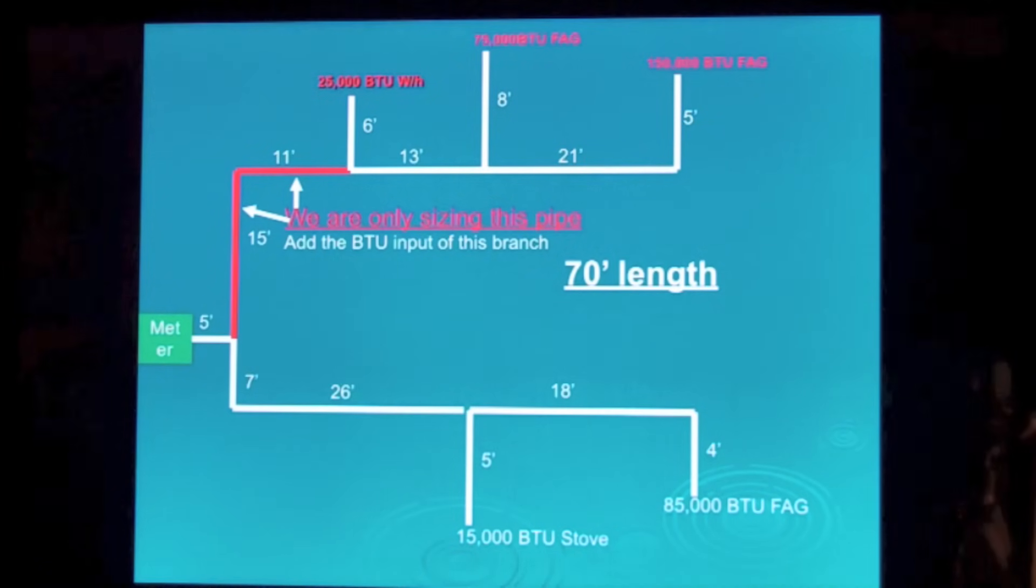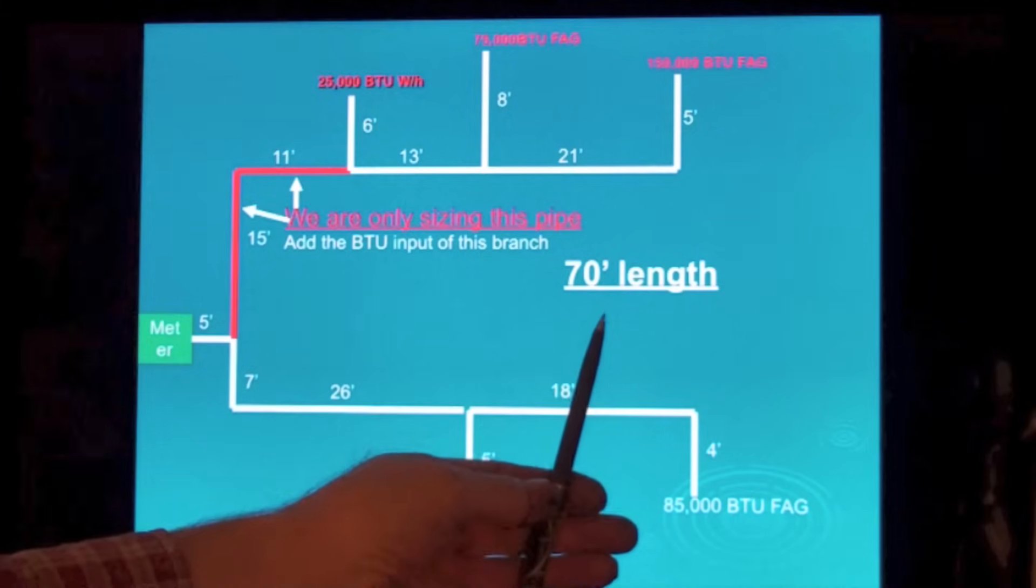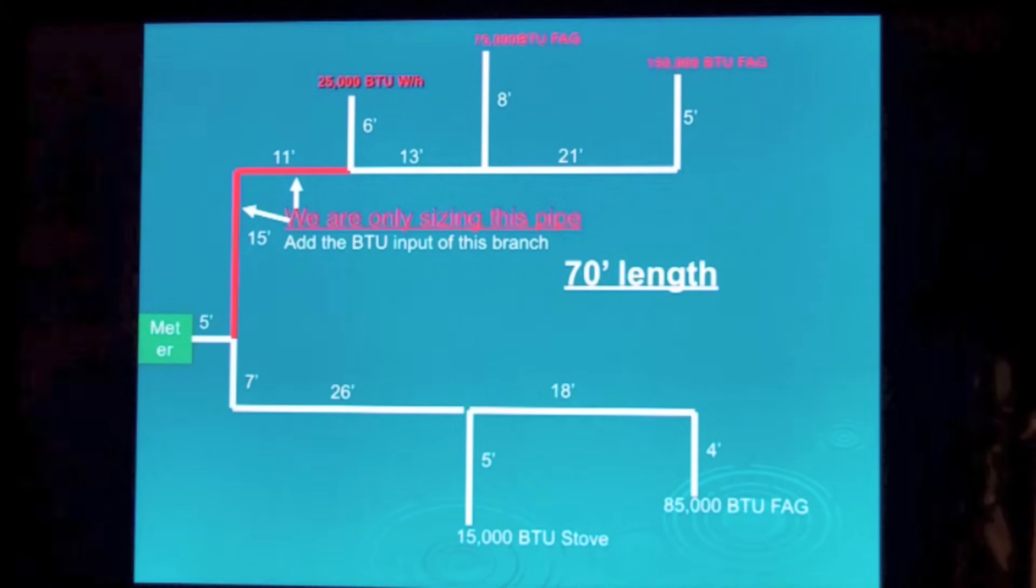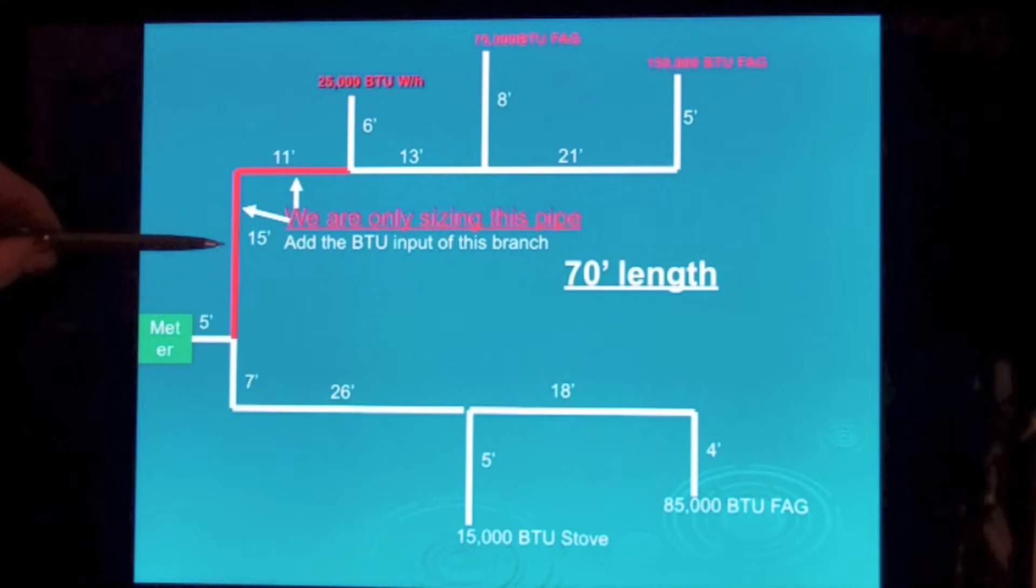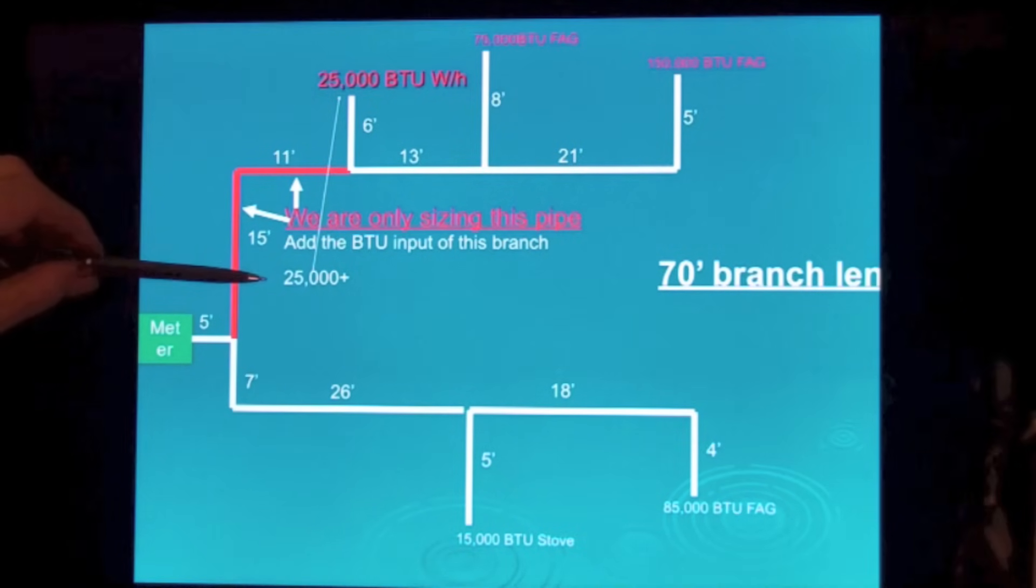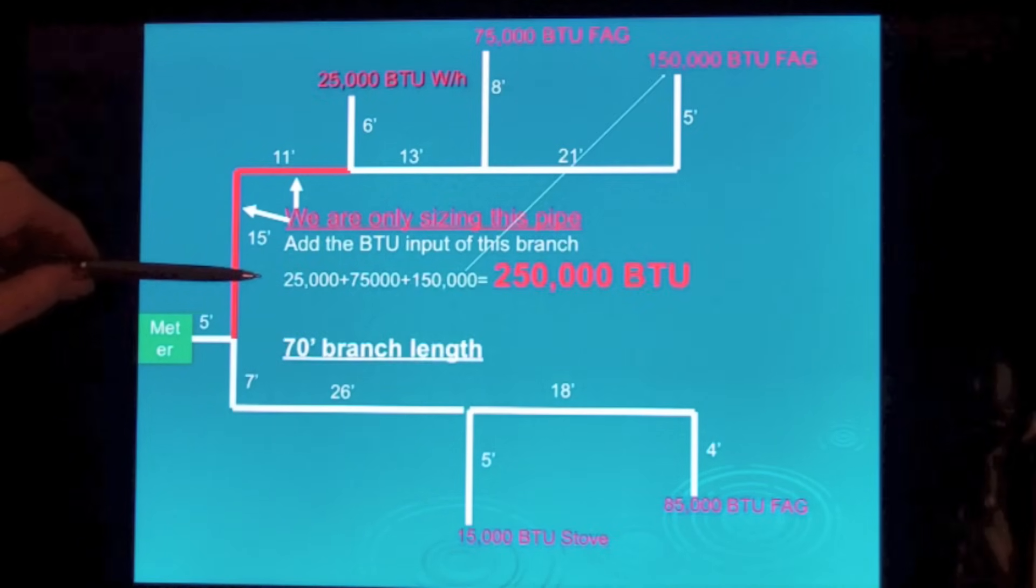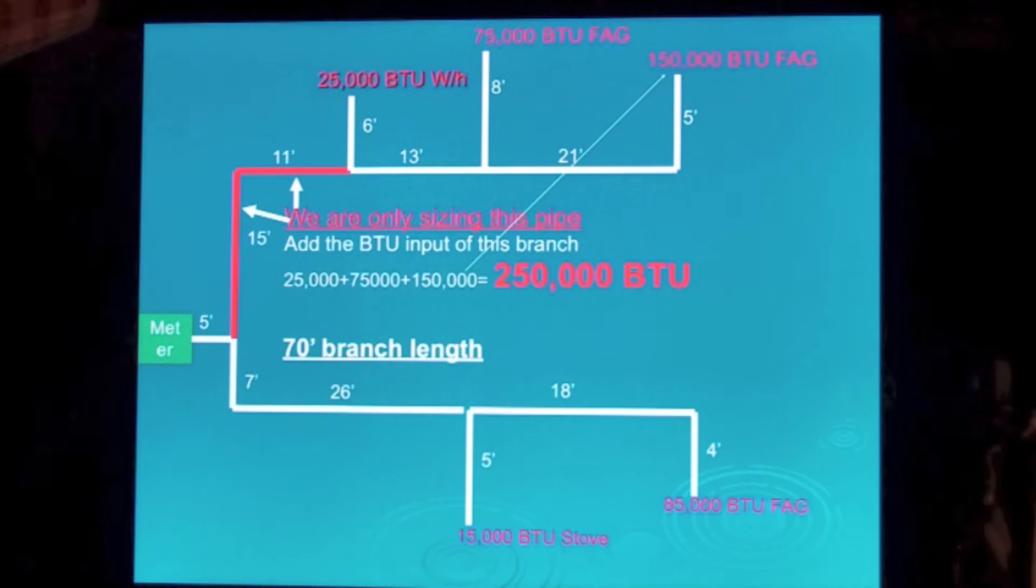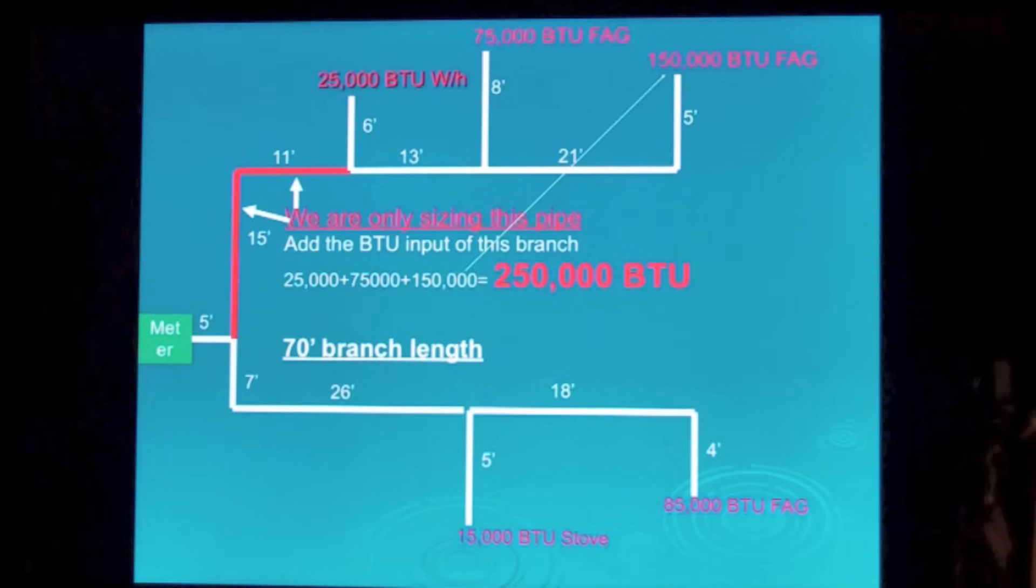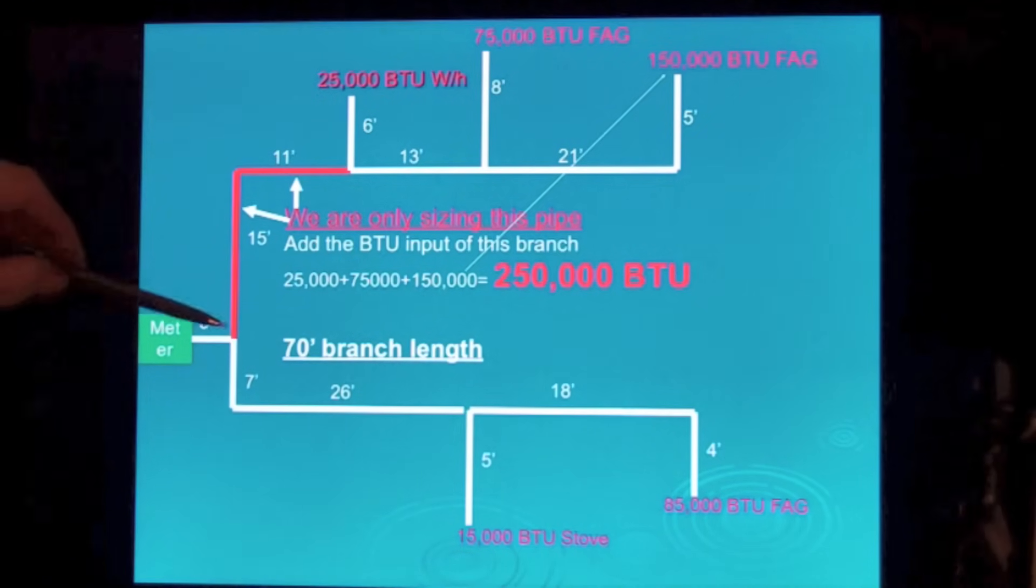Now we're going to size the rest of these drops here. We're going to use that same length. We're not going to change the length. That's the only number you're going to use throughout this whole branch sizing. So we go 25,000, 75,000, 150,000. That gives me all of the appliances that are in this branch. Up to this point we're only sizing this pipe right here.